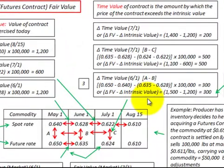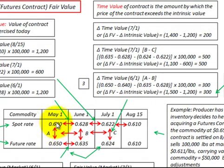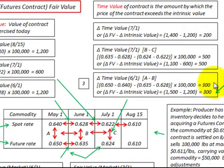To determine the change in time value for each period, the time value is the amount by which the price of this contract exceeds the intrinsic value. There are two ways to determine the change in time value. The first is arithmetic: we determine the change between the spot rate and the future rate between the previous period and the current period. For the June 1st period, we take the difference between the future rate of 0.650 and spot rate of 0.640, then subtract the difference between the future rate of 0.635 and spot rate of 0.628, multiply by the quantity under contract, and we have a change in time value of $300.